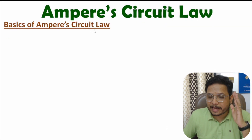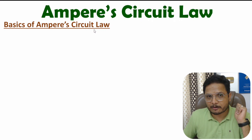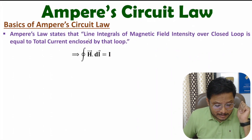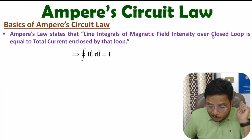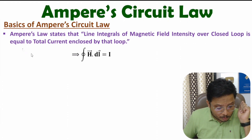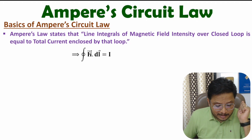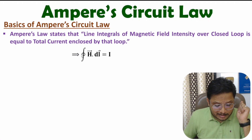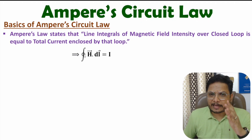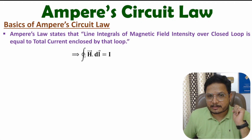First of all, let me explain the statement of Ampere's Circuit Law. The statement is: line integral of magnetic field intensity over a closed loop is equal to the total current enclosed by that loop. So here magnetic field intensity is H, and line integral of magnetic field intensity over a closed loop equals total current I enclosed by the given loop. Let me explain that by graphical understanding.